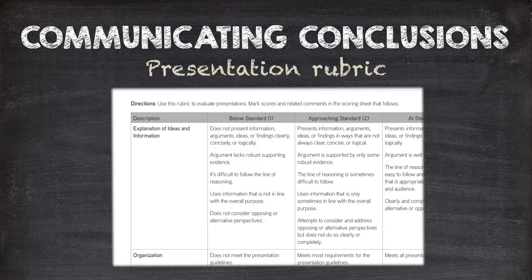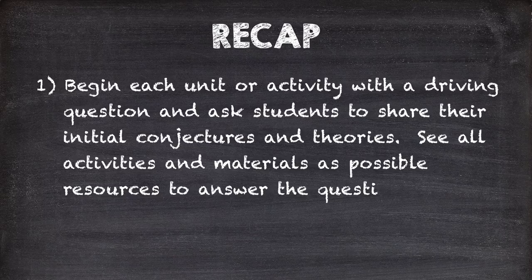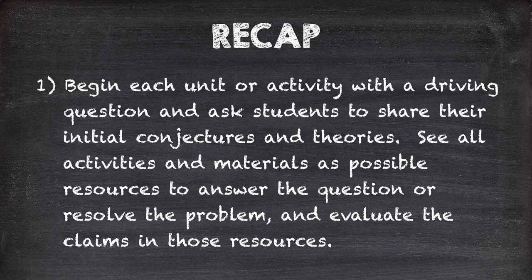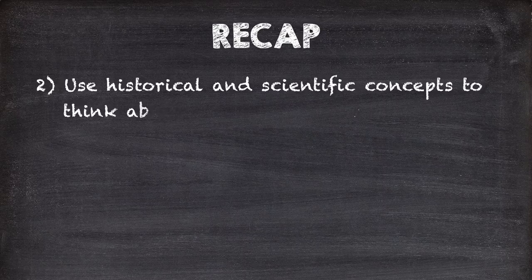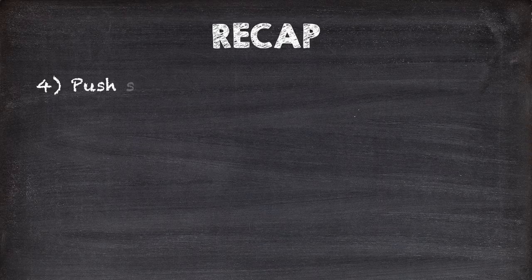So just a quick recap. One: begin each unit or activity with a driving question and ask students to share their initial conjectures and theories — all activities and materials are possible resources to answer the question and evaluate the claims in those resources. Two: use historical and scientific concepts to think about the question or problem. Three: help students draw on and evaluate information from a wide variety of disciplines. Four: push students to communicate their conclusions effectively throughout the course.